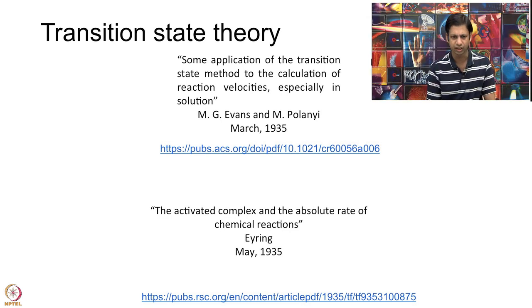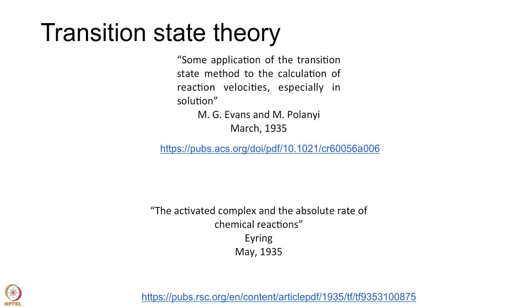The second paper was by Eyring: 'The Activated Complex and the Absolute Rate of Chemical Reactions' — the absolute rate again meaning rate constant. These three people essentially developed Transition State Theory. Both papers developed very similar ideas and combined together it is called Transition State Theory today. The formulas written in these papers are still used today, and in the next several modules we are going to understand what was developed in them.